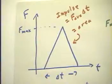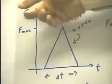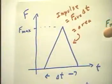In a collision, for example, the force is not always constant. And we want to know if we have a force versus time graph, how do we find the impulse?